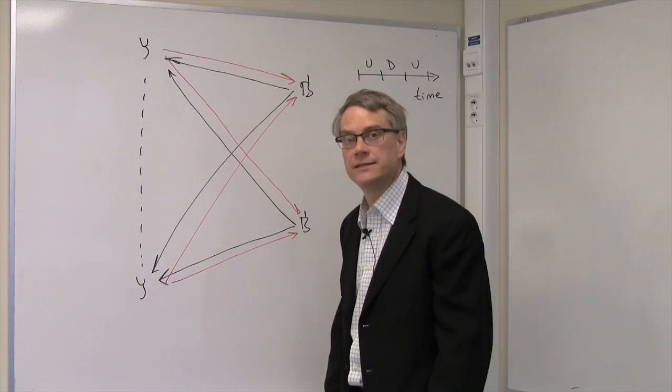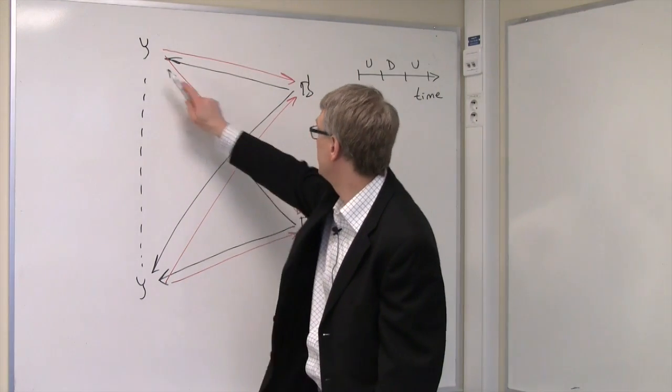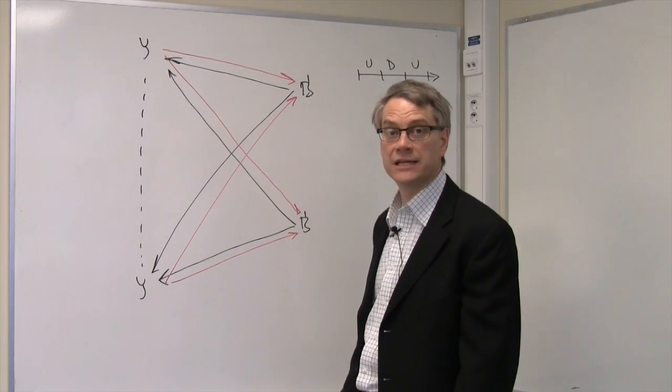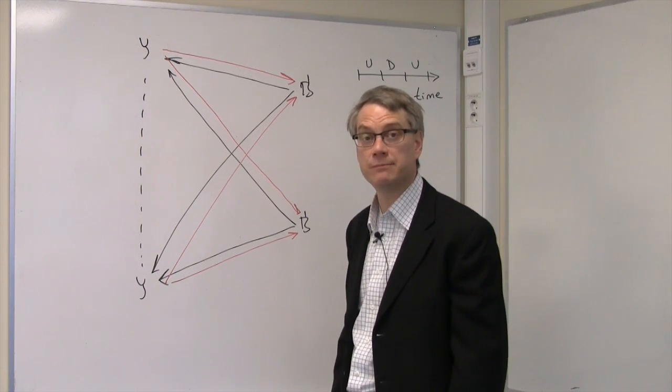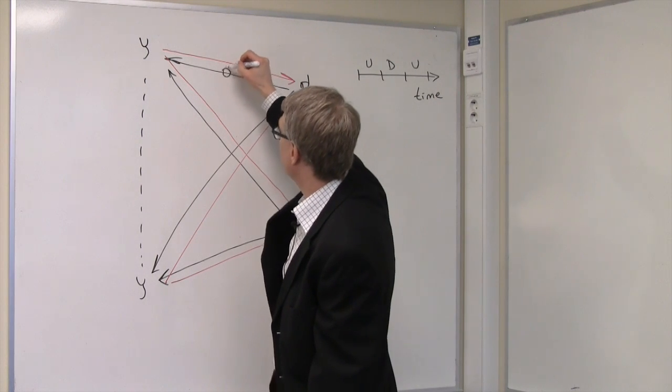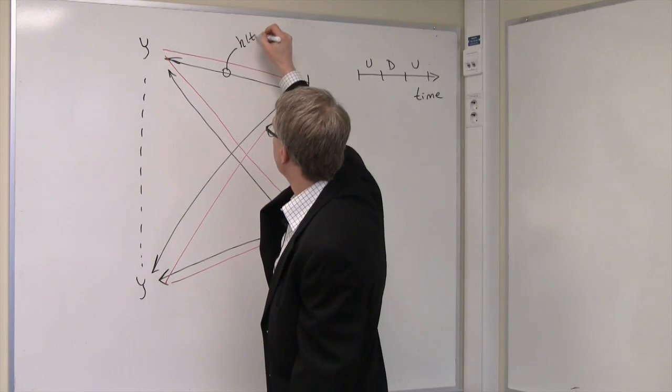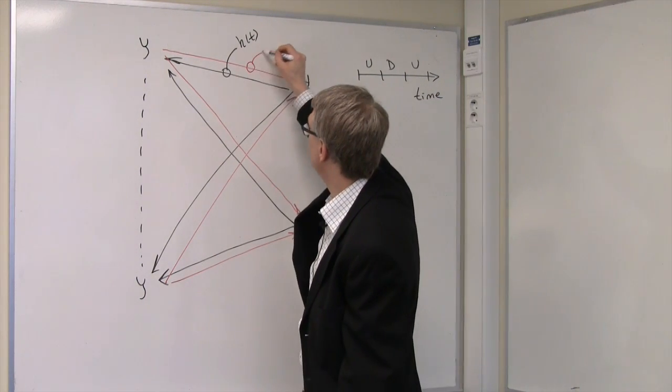The consequence of that is that the propagation channel between any base station antenna and any terminal, that propagation channel can be viewed as a linear time invariant system. And therefore characterized by its impulse response. We call that impulse response in the uplink, H of t. And the corresponding impulse response in the downlink, G of t.